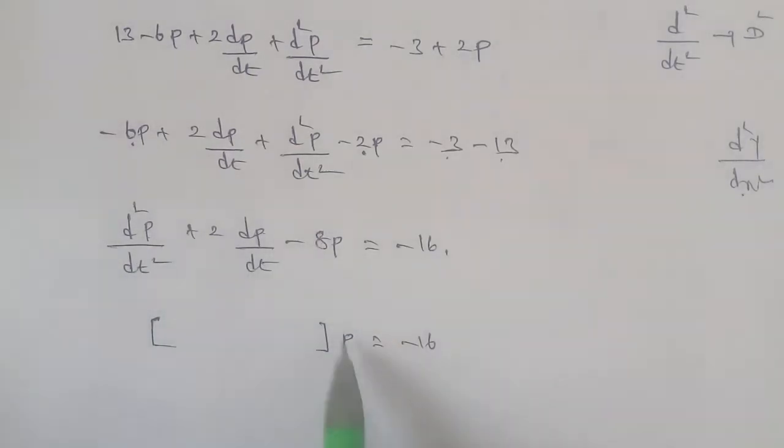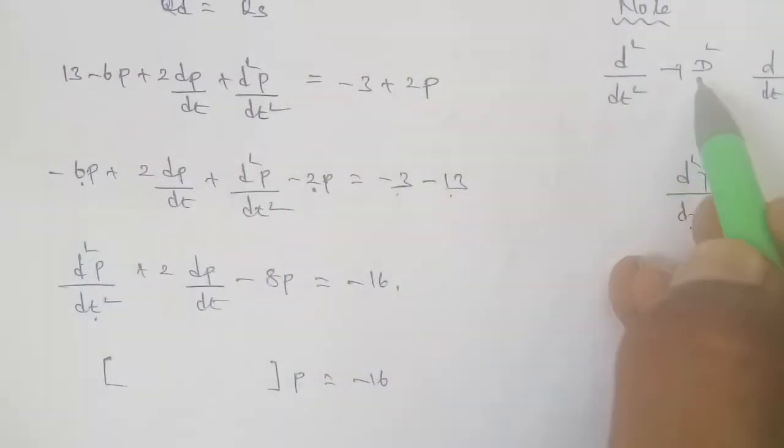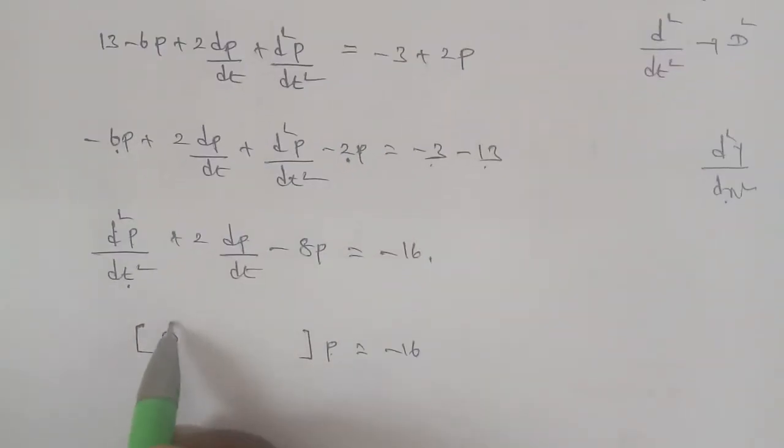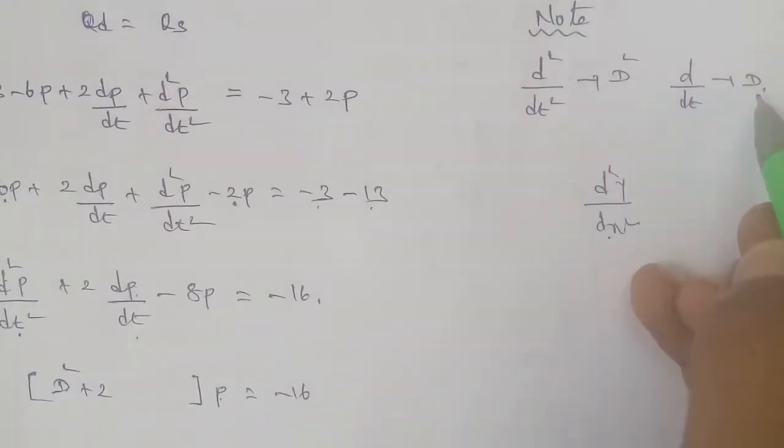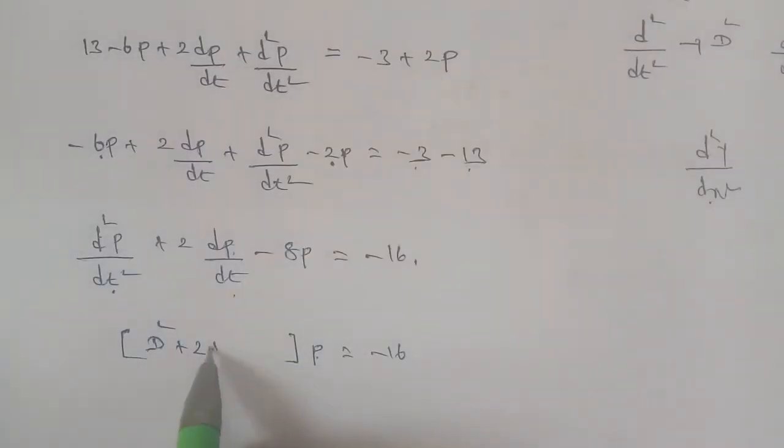The remaining term is d²p/dt² plus 2d term, so d²p/dt² plus 2 dp/dt minus 8p equal to minus 16. This is a second order linear differential equation.